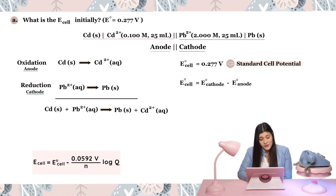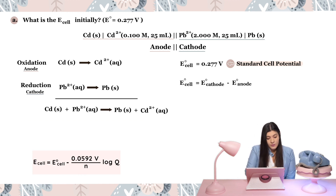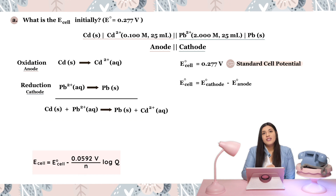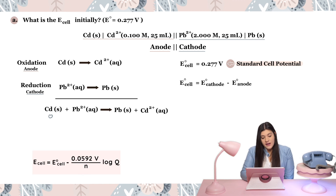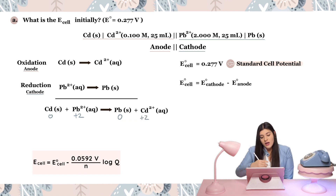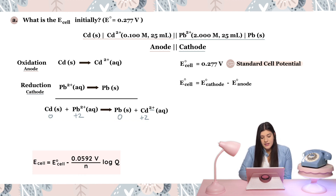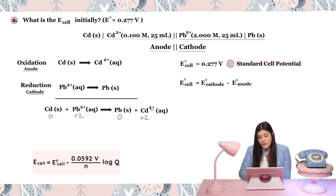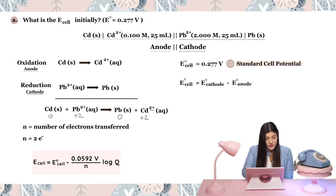The balanced equation tells us how many electrons are transferred. Looking at oxidation numbers: anything in its solid state has an oxidation number of zero, and for a single element with a charge, the charge is the oxidation number. So this plus-two is the oxidation number. Going from zero to two, or two to zero, we're transferring just two electrons — same for cadmium, only two electrons. So there are two electrons overall being transferred.